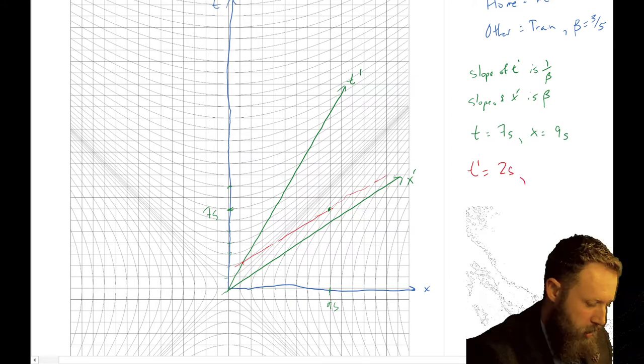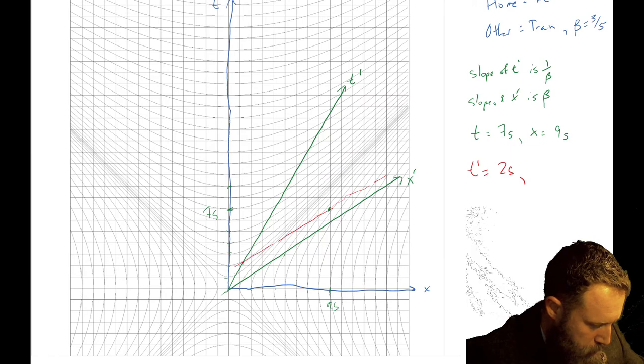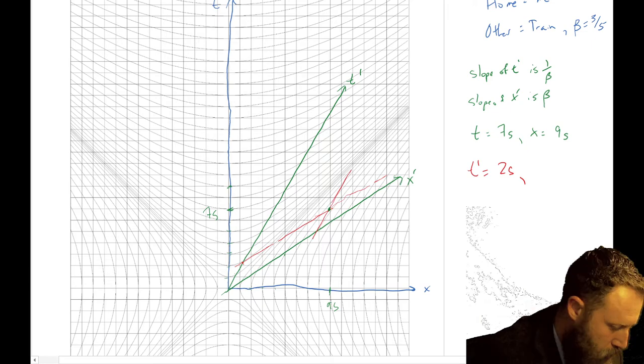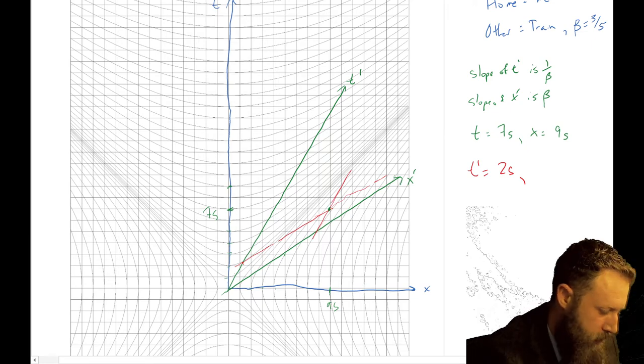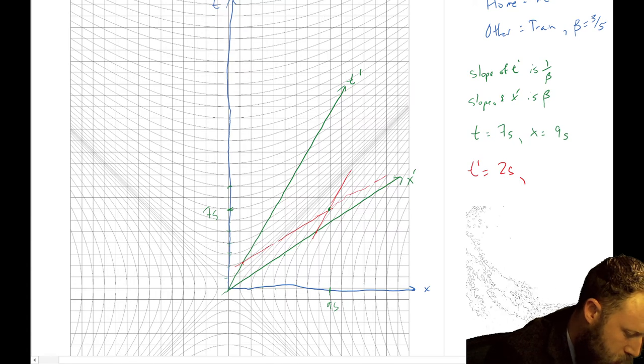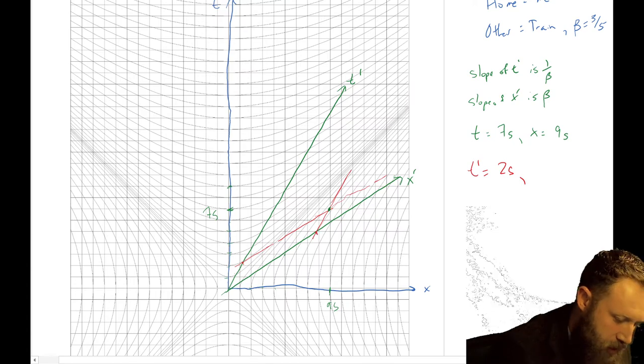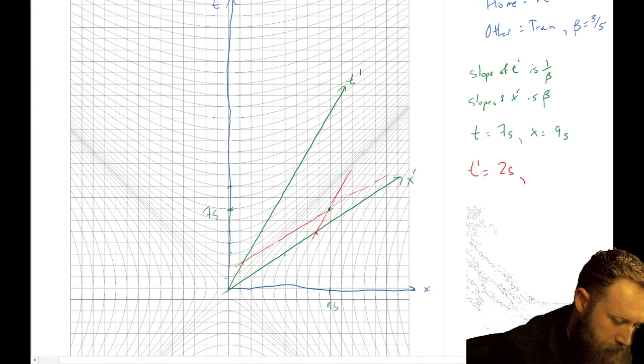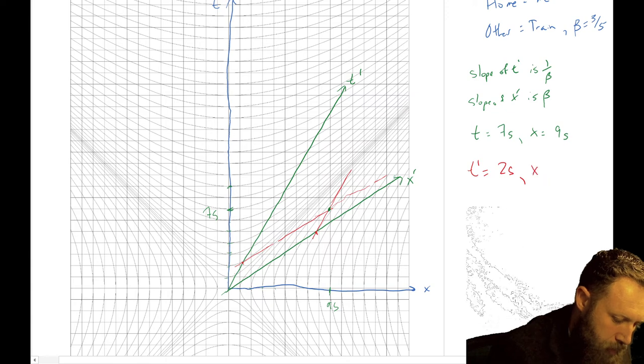If we do the same thing, but now we're looking for the x, so I'm going to draw something parallel to the t-prime. You see it goes right around here. Now if we count again, there's 1, 2, 3, 4, 5, 6, around six seconds in the x-prime. x-prime equals six seconds.